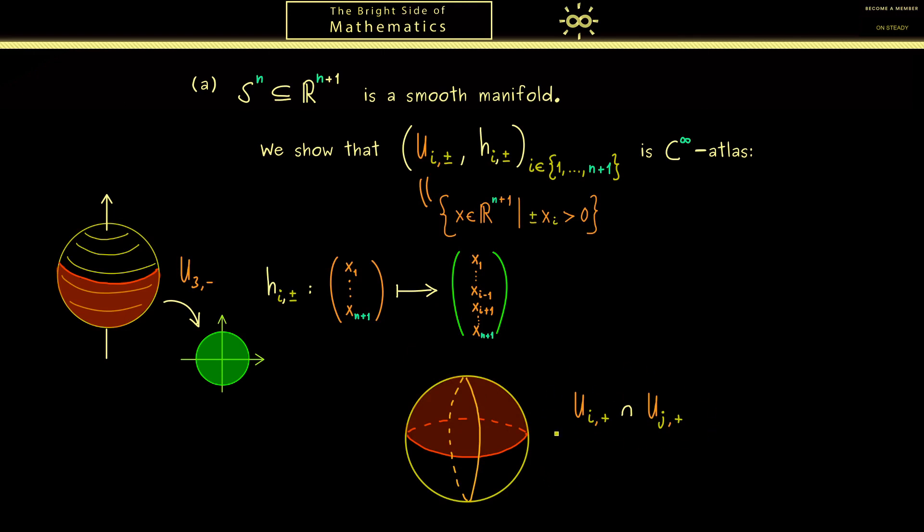For example, we could imagine that U_{i,+} is the northern hemisphere, which means U_{3,+}. On the other hand, the other set could be U_{1,+}. And then you should see this intersection here is this upper quarter of the sphere.